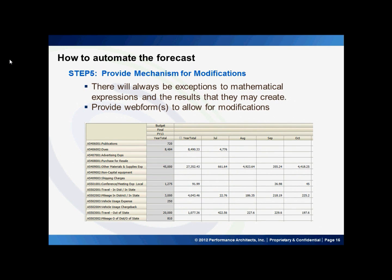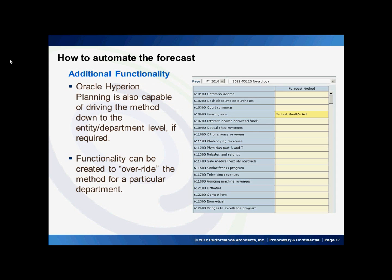Once our scripts process the data, there are always going to be situations where data needs to be modified. For this, there is step 5: providing a mechanism to make modifications. This is typically done utilizing a web form, as shown here. In this example, the forecast is shown in the form for a specific department and the user can modify as needed. We often see that organizations require more granularity in assigning forecast methods — some have the need to assign methods by account but also by department or entity. For this, it is very possible to set up Hyperion Planning to have override capabilities. The user can choose a specific department and then choose a forecast method to override the one chosen for the specific account, such as using the last month's actual method for the hearing aid account instead of the default account method.